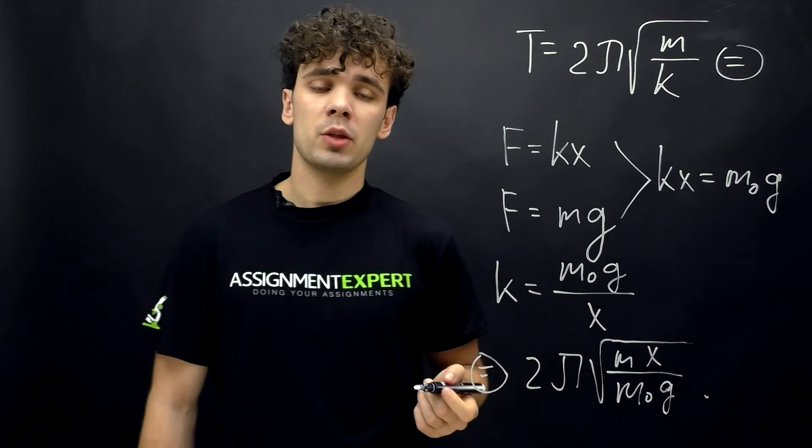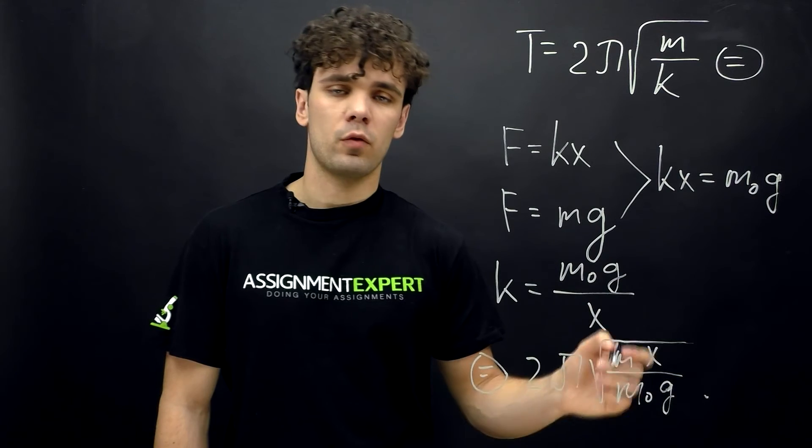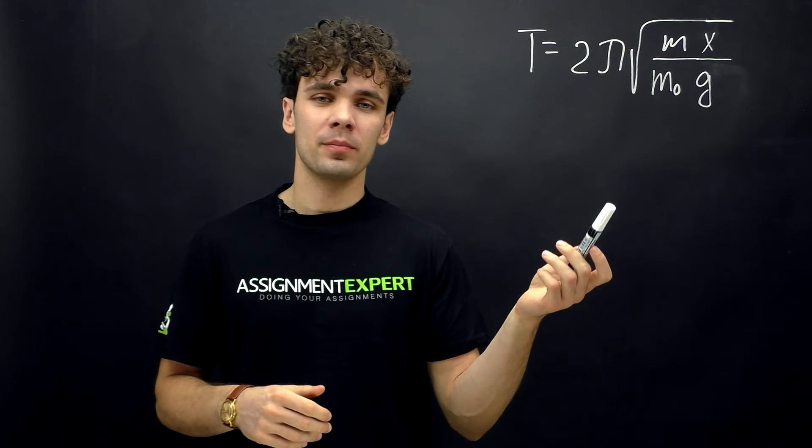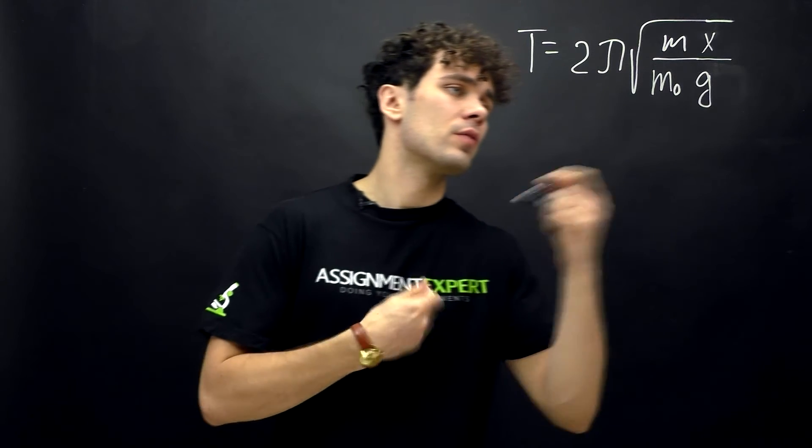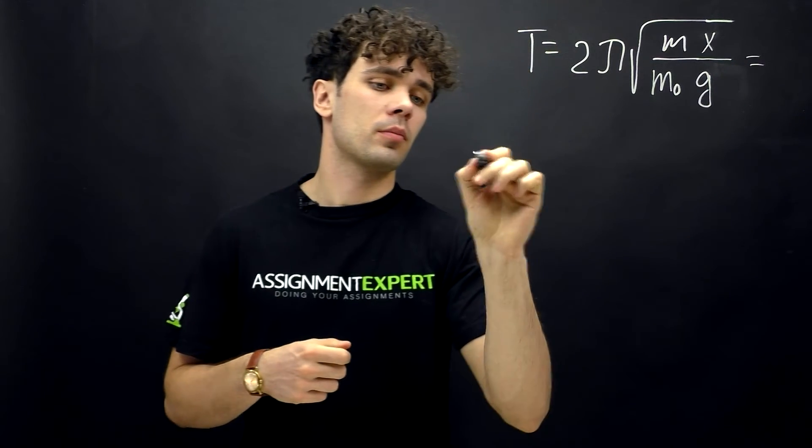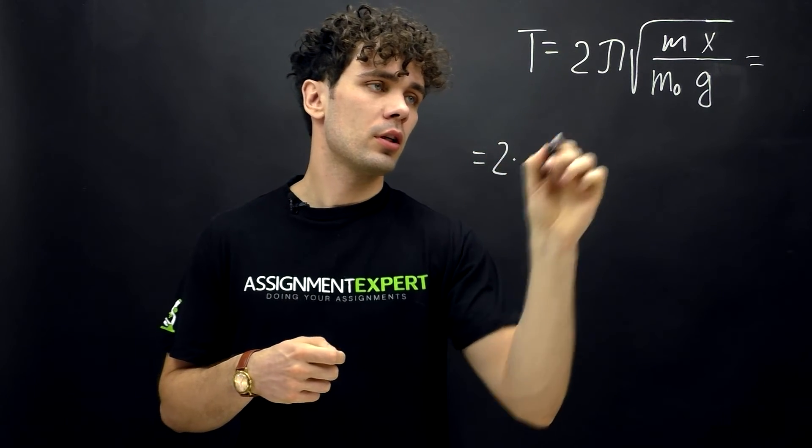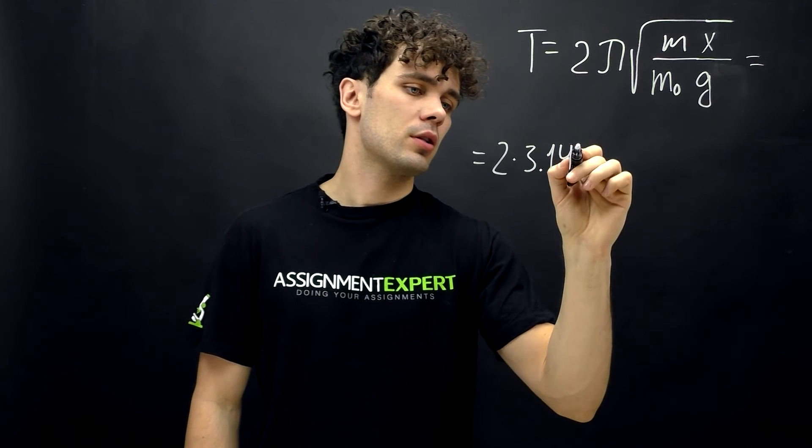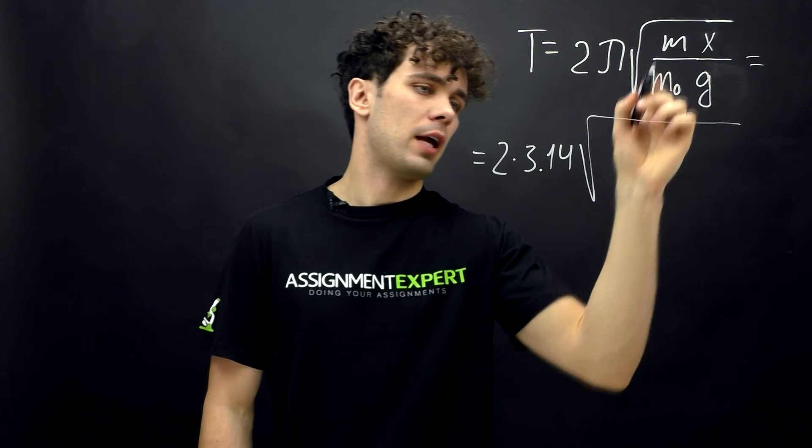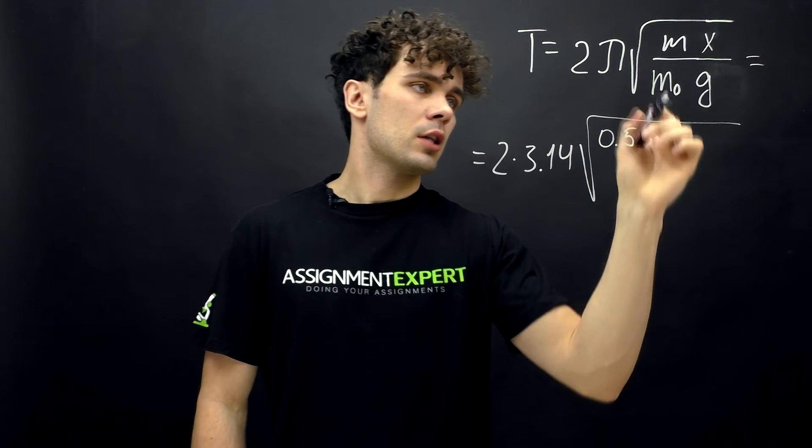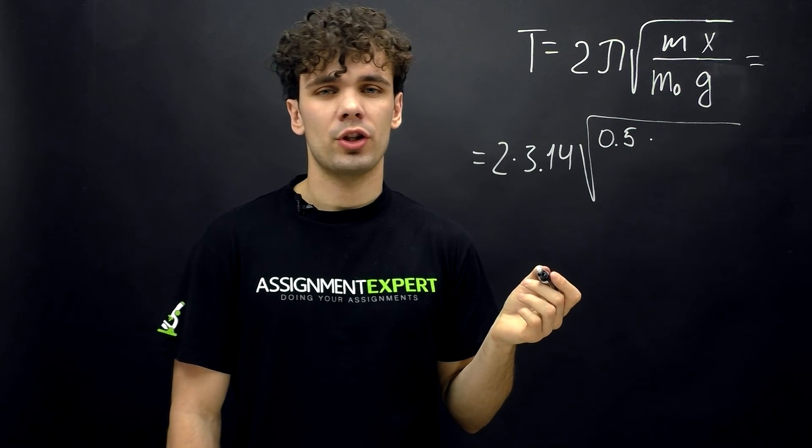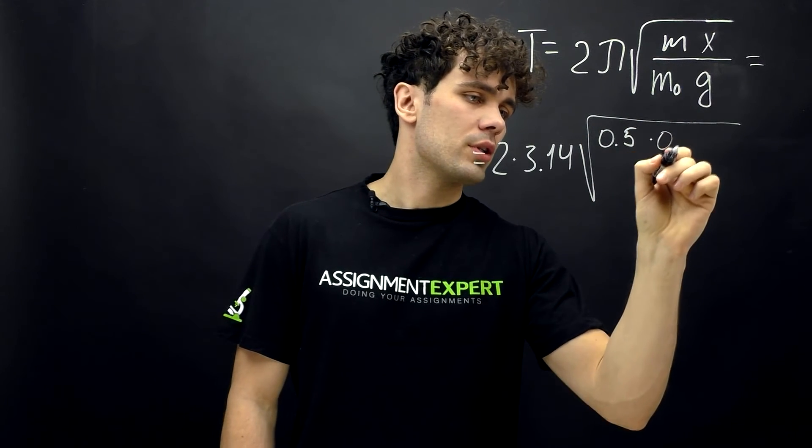Now let's put all the variables into this formula. So here is our formula and this one gives us the following: 2 times 3.14 times the square root of m, which is half kilo, times the elongation of the spring, which is 16 centimeters or 0.16 meters,